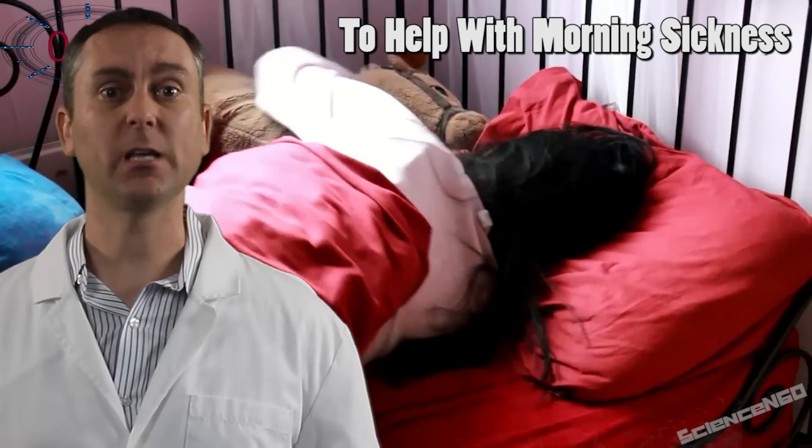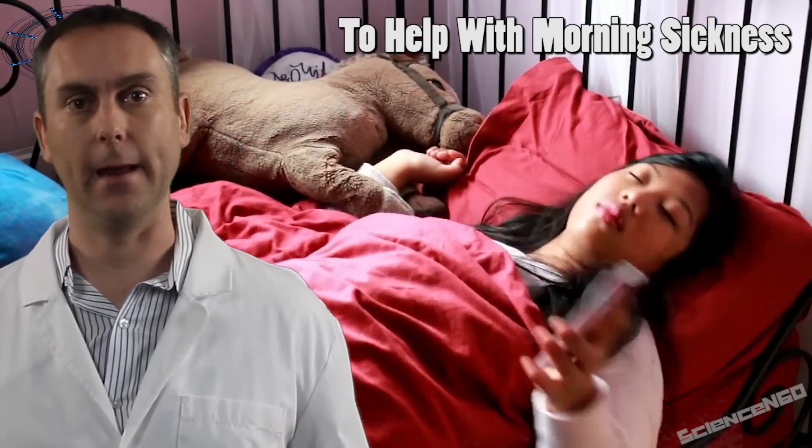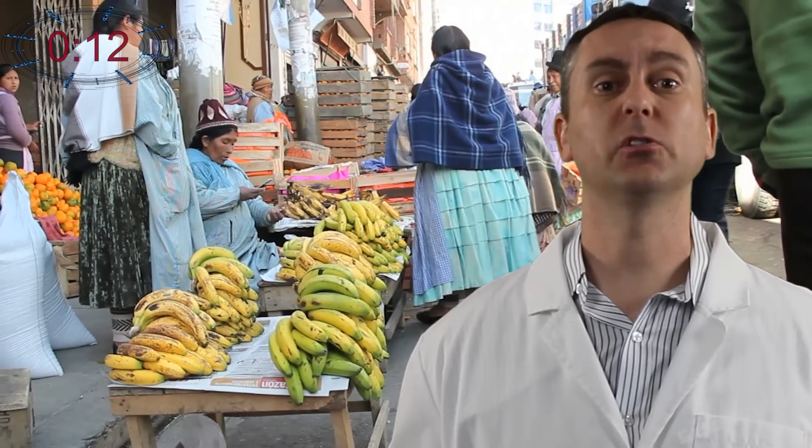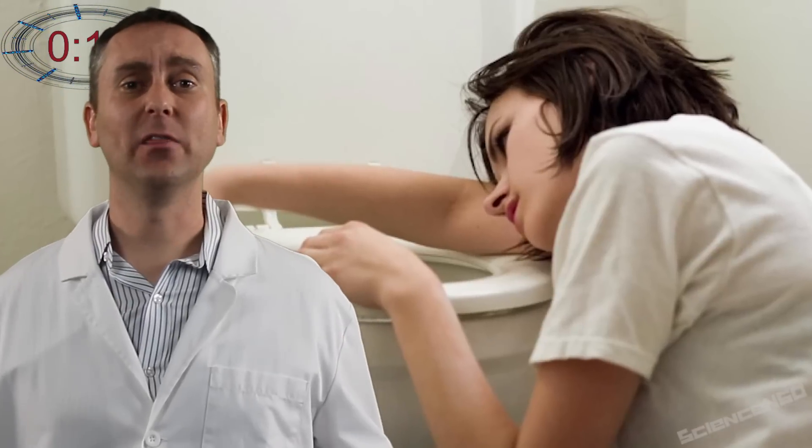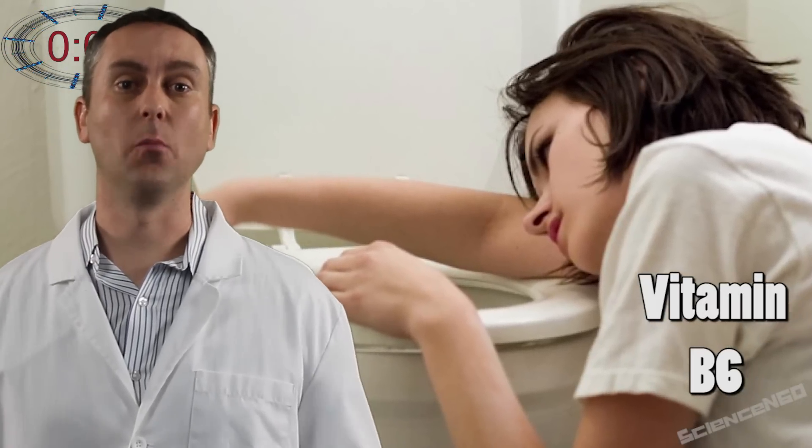Eating a bunch of small meals helps so you're never running on empty during the day. Also, eating a banana at night before you go to bed helps with nausea in the morning and induces sleep at night. Studies have shown that vitamin B6 improves symptoms of morning sickness as well.